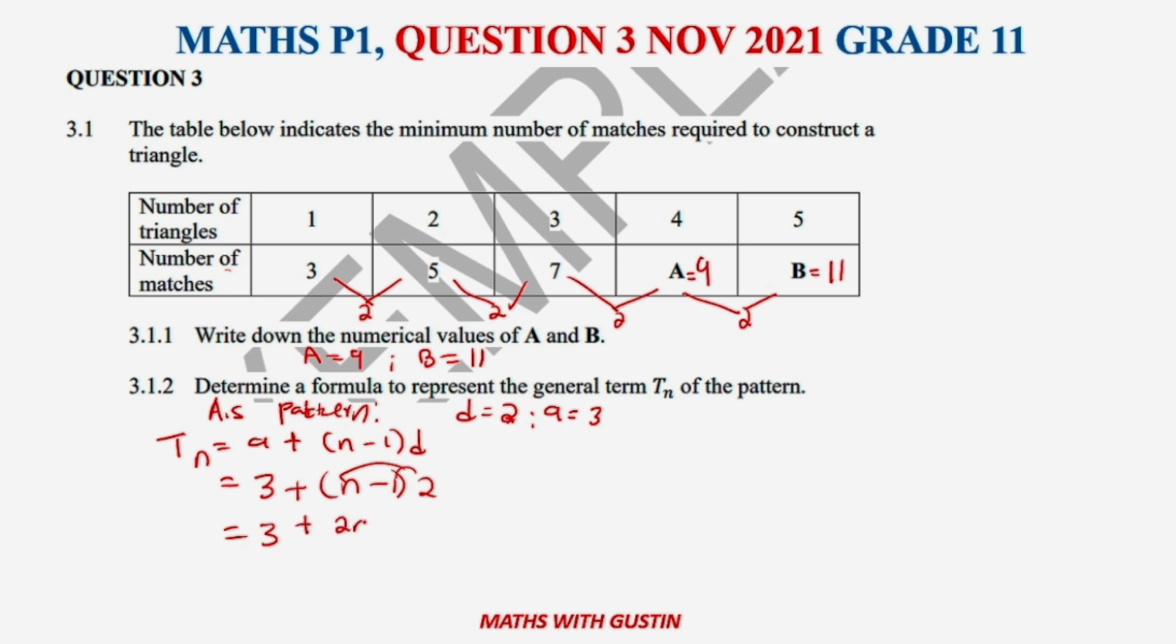This leaves us with the value of Tn which equals 2n plus 3 minus 2, which is going to give us 2n + 1. And that's our formula for this number pattern.